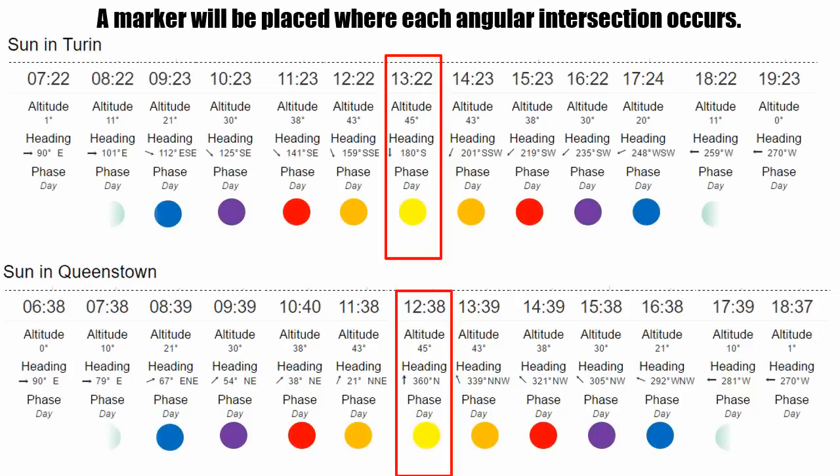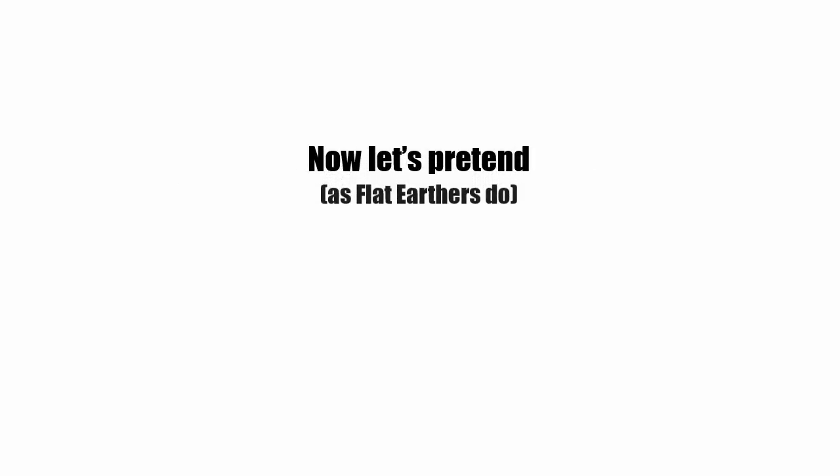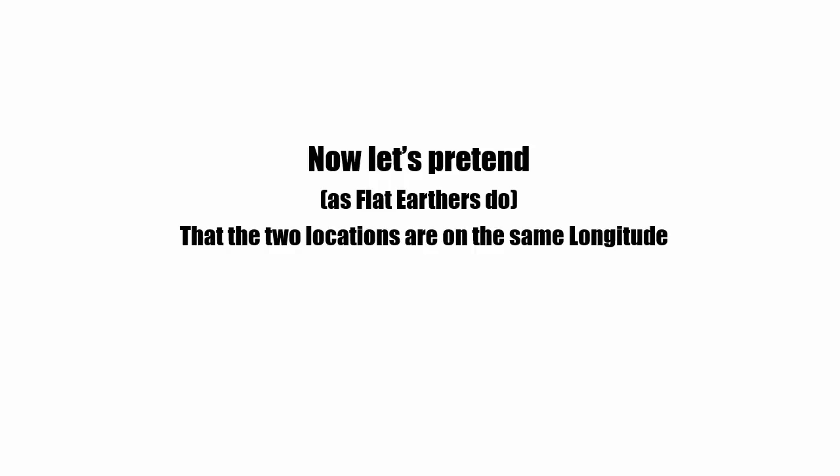Now the reason why the zenith in Turin is not the same time as the zenith in Queenstown has to do with the time zone that they're in and where they are located within that time zone. Time zones are not geographical constants with relation to the sun. Time zones are decided by the countries where the time zone resides. Now let's just pretend, as most flat earthers do, that the two locations are on the same longitude, meaning that one is directly north or south of the other.